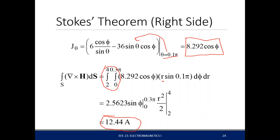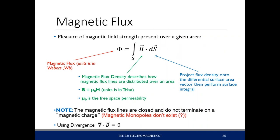Let's have a recap: we have Biot-Savart's law, Ampere's circuital law, the curl, and then Stokes' theorem. Something may be missing. For the electric field intensity there is an electric flux density — our magnetic field also has a magnetic flux.